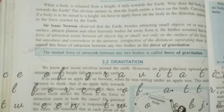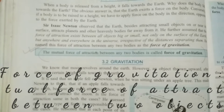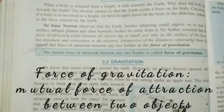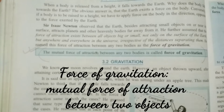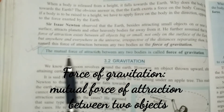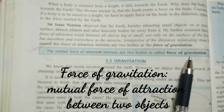He said whenever two objects are there, anywhere in the universe — it is not that only on the earth's surface this is true — there is a force of attraction between the objects, and that force is termed as force of gravitation. In simple terms, the mutual force of attraction between any two bodies is called force of gravitation.